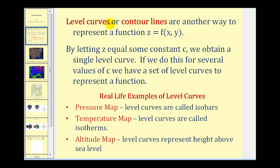Level curves, sometimes called contour lines, are another way to represent a function z equals f of x, y. By letting z equal some constant, we obtain a single level curve. Remember, you can think of z as the height of the surface. So what we're doing is taking slices of the surface at different heights and then graphing those on the x, y plane. If we do this for several values of c, we have a set of level curves to represent a given function.